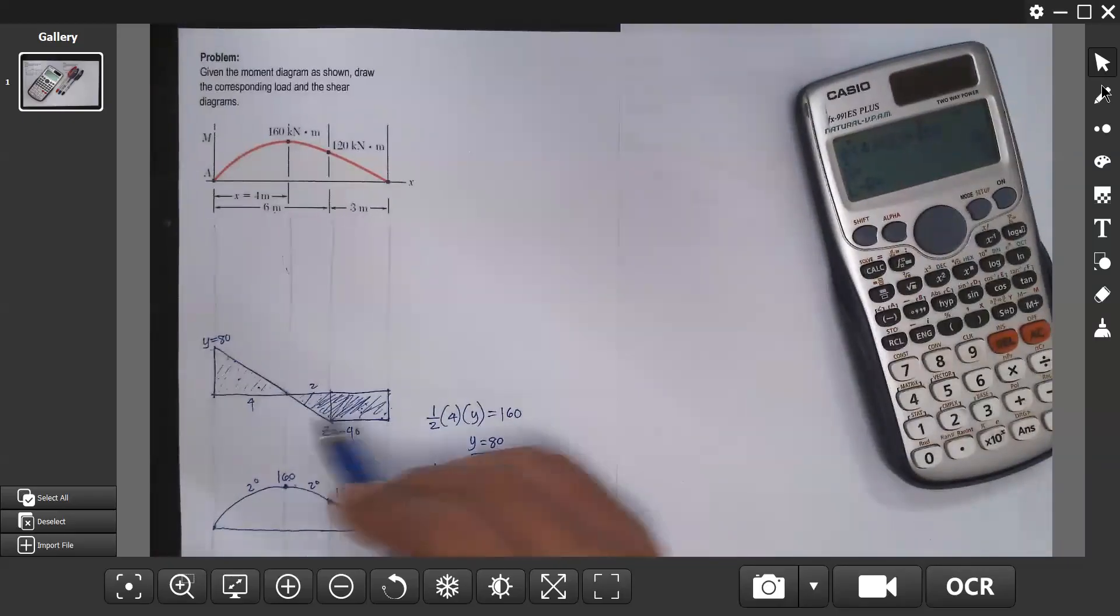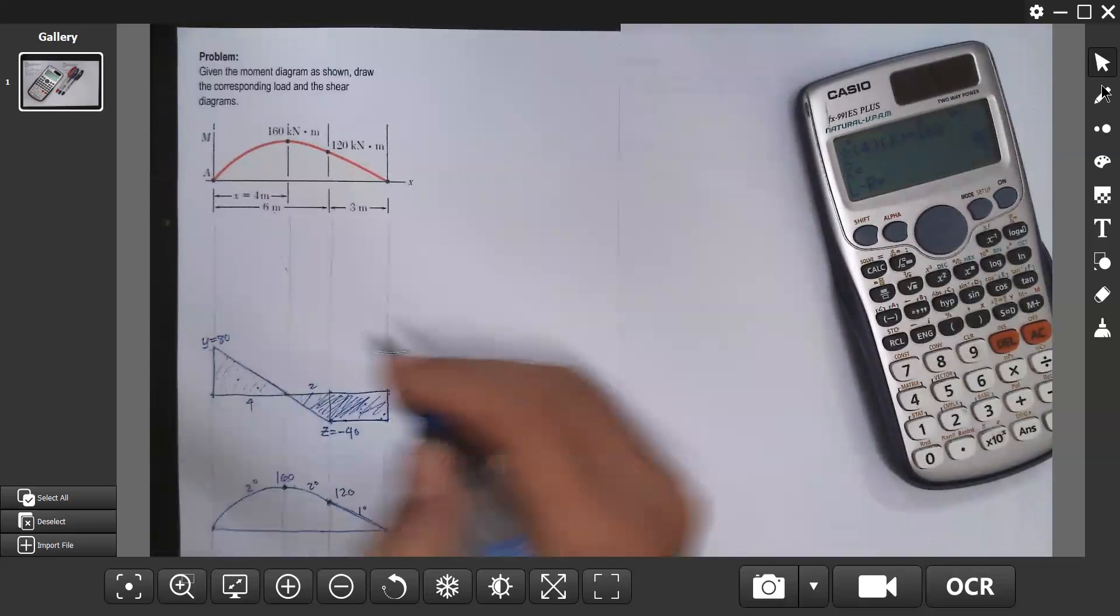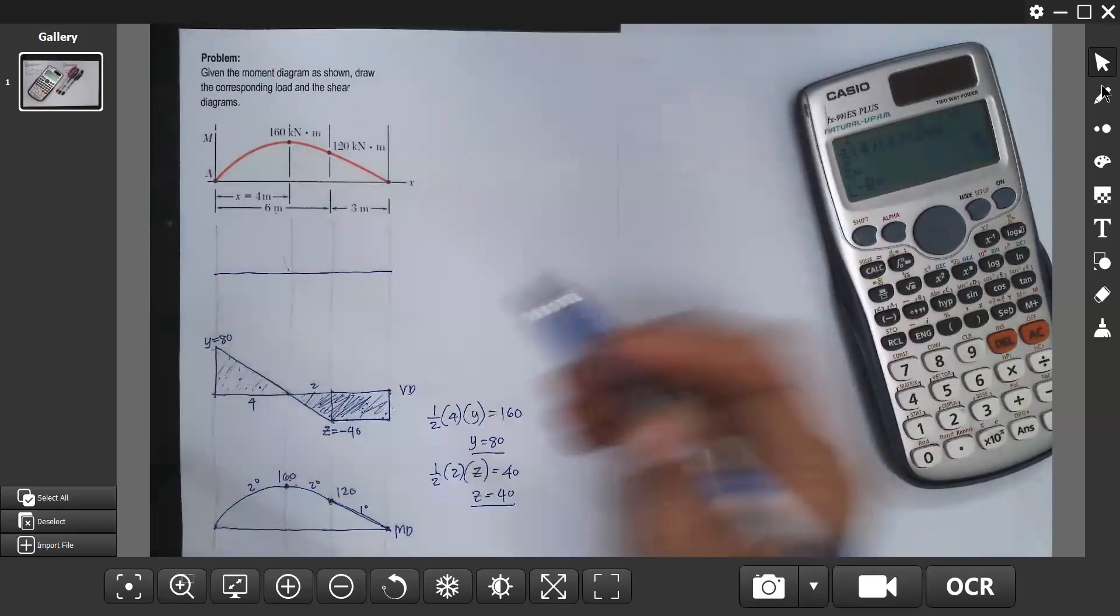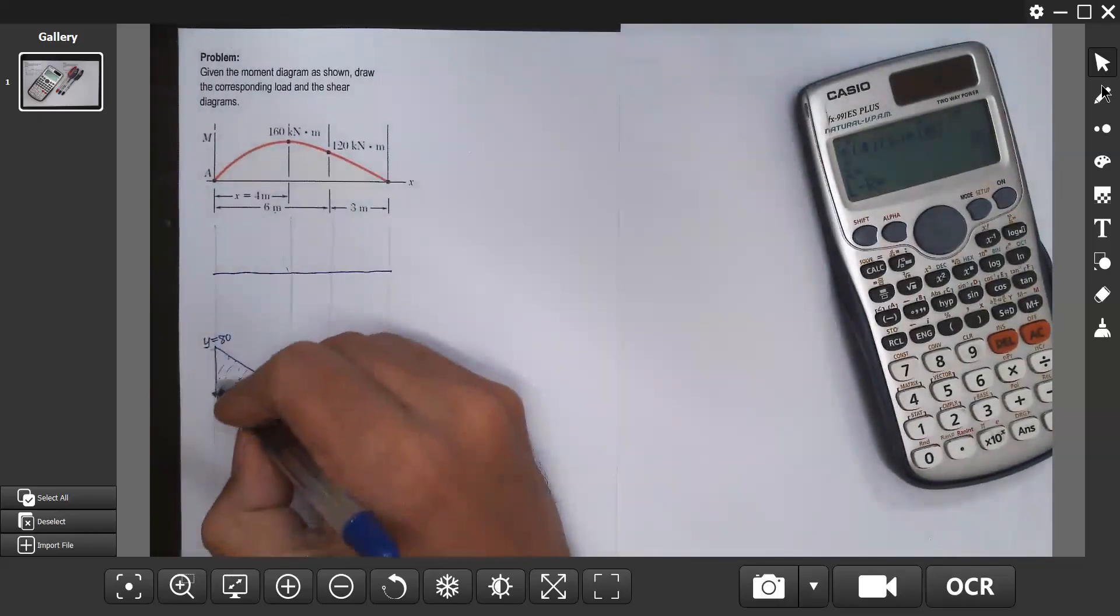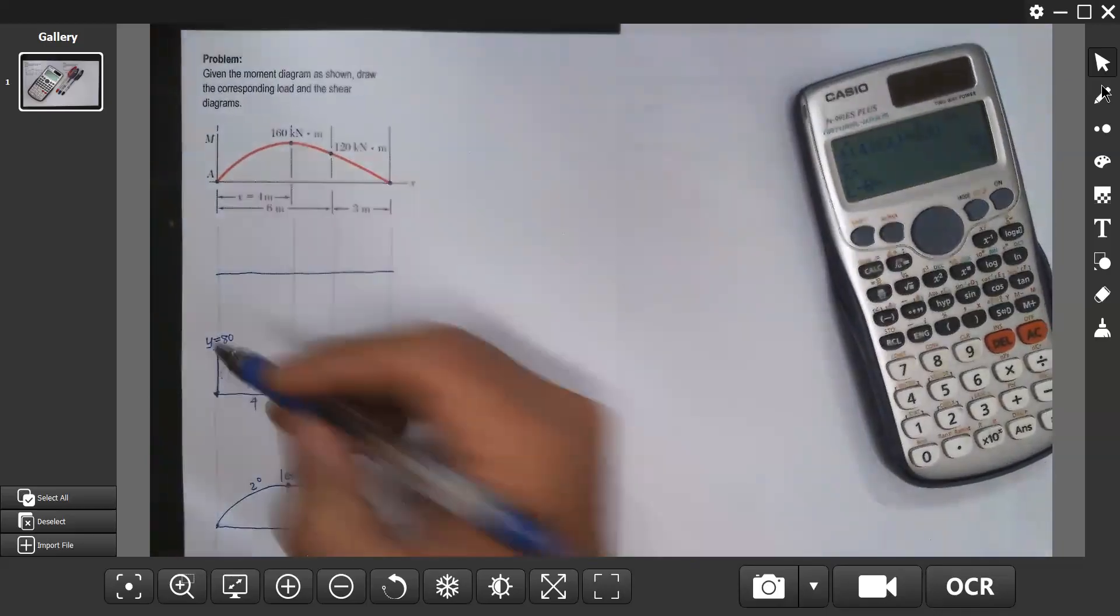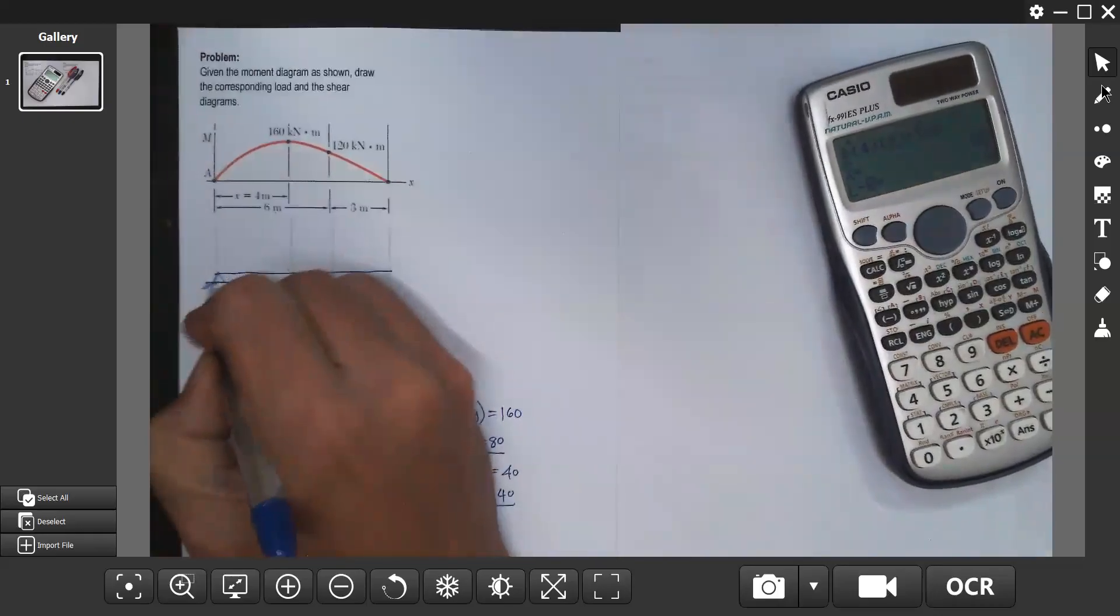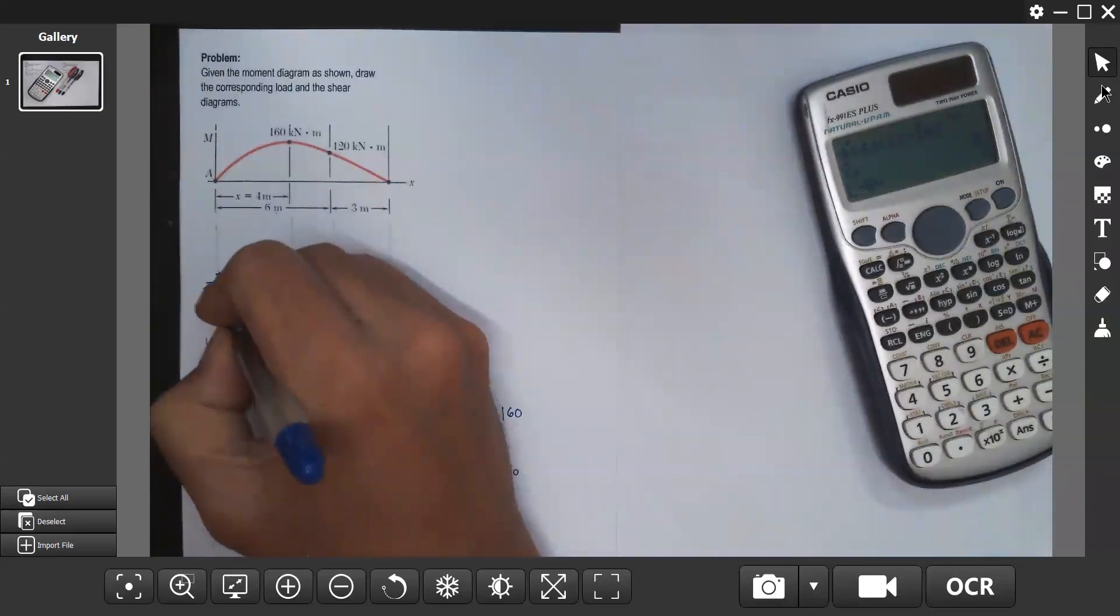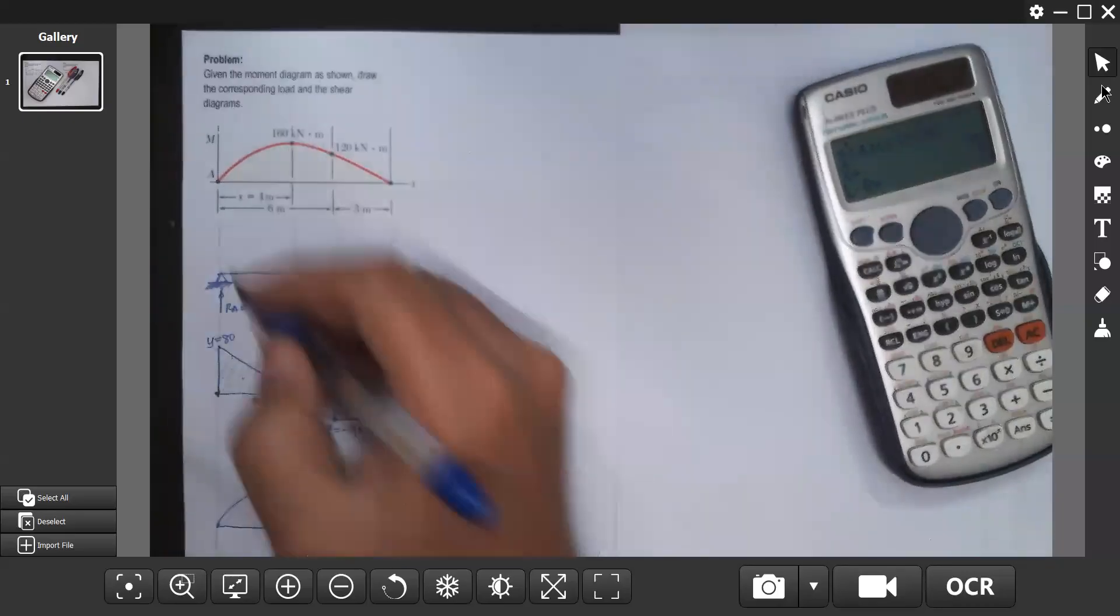This is your shear diagram. Now after this, we can draw the load diagram. In the load diagram, from shear, from 0 it goes up to 80. So probably it's a reaction upward. We'll check that later. So you have RA at point A equal to 80.